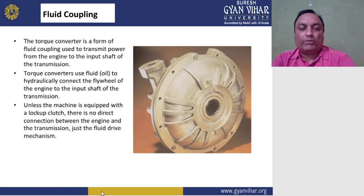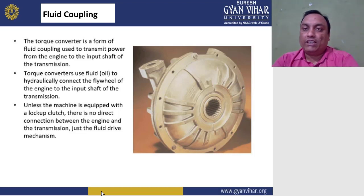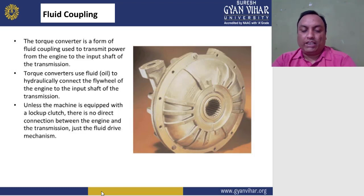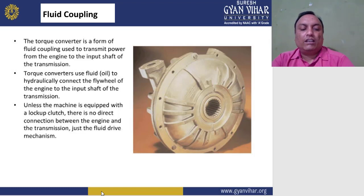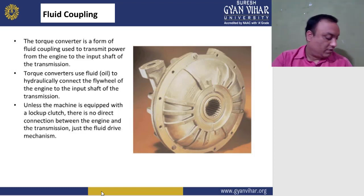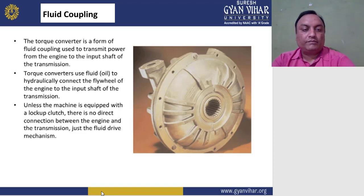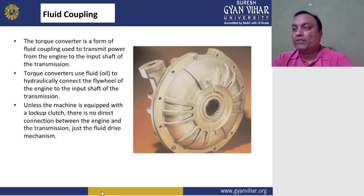The torque converter is a form of fluid coupling used to transmit power from the engine to the input shaft of the transmission. It reduces engine vibration and cannot transfer vibration from the engine to the other body. The fluid coupling uses hydraulic fluid or oil to hydraulically connect the flywheel of the engine to the input shaft of the transmission. Unless equipped with a locked clutch, there is no direct connection between the engine and transmission — just the fluid drive mechanism.